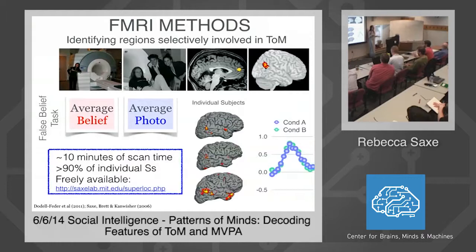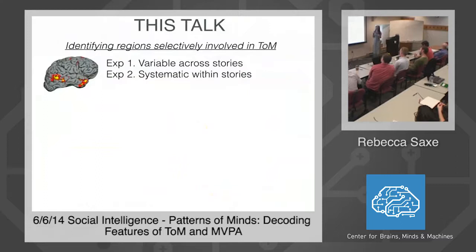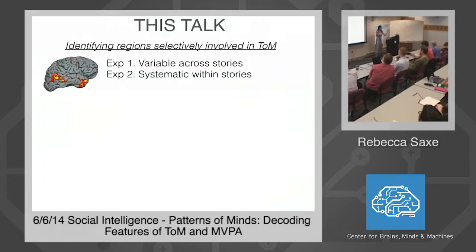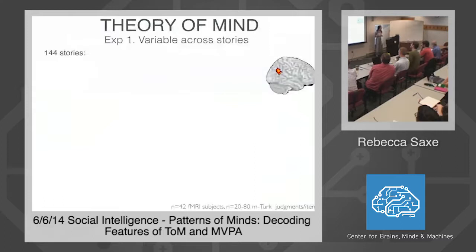In all of the rest of the talk, I'll use this contrast of stories about beliefs versus photographs in individual subjects to find regions involved in thinking about other minds, then ask what those regions do in more detailed tasks. The first thing we wanted to know is whether there's any evidence this is really about mental states as opposed to other information about people — since the only contrast so far is people-with-mental-states versus no-people-with-no-mental-states. I'll show you some of the evidence that this pattern is a specific signature of theory of mind, from two experiments out of a very large number.